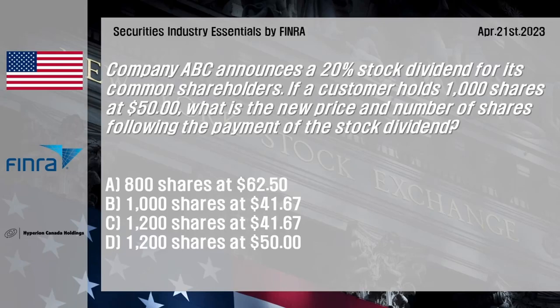Company ABC announces a 20% stock dividend for its common shareholders. If a customer holds 1,000 shares at $50, what is the new price and number of shares following the payment of the stock dividend? Answer choices: 800 shares at $62.50; 1,000 shares at $41.67; 1,200 shares at $41.67; 1,200 shares at $50.